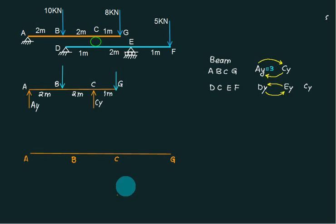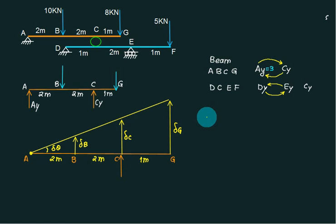Mark point A. You want to find out CY, so show the force CY. To find out CY, you have to rotate about A. So rotate about A. Since the support is at A, it means that all the points will go upward. Del theta, del B divided by 2, del C divided by 4, del G divided by 5. Now show external forces, one at B and one at G.